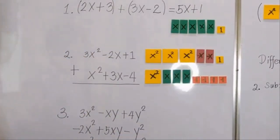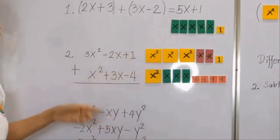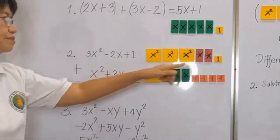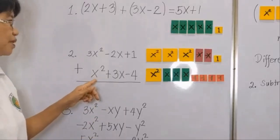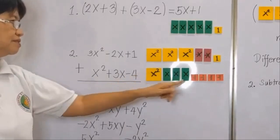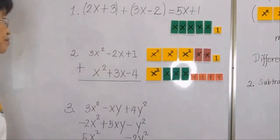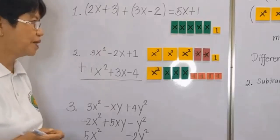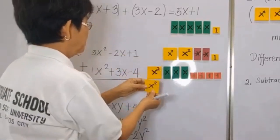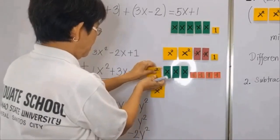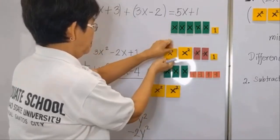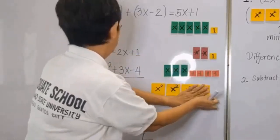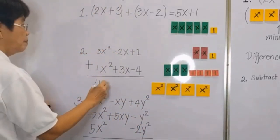Second example. We have 3x squared represented here, and minus 2x represented by the two red tiles, and plus 1 here. Plus x squared plus 3x minus 4. Putting them together, we have 3 plus 1, so you have 4x squared.